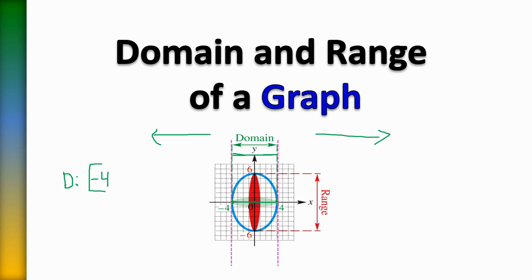Whenever it starts at a point, we use a bracket to write it in interval notation form. So the domain goes from negative 4, comma, all the way to positive 4, and we close that with a bracket. That is how we write the domain of this graph — it goes from negative 4 to positive 4. Now let's look at the range.